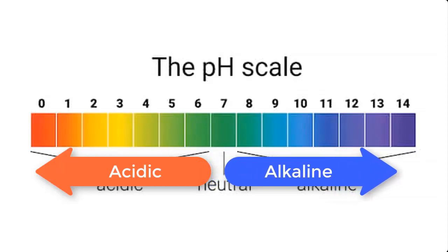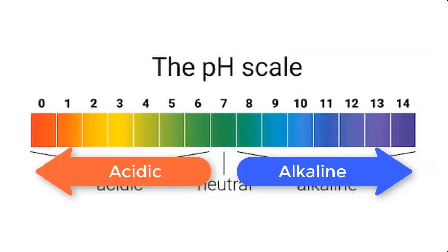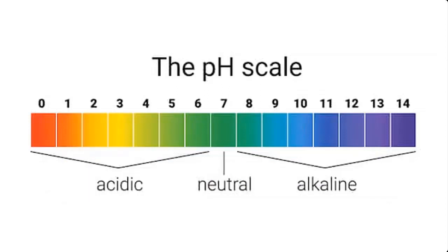In summary, 8 is least alkaline while 14 is most alkaline. Every unit on the scale is represented by a color, so in our test we are going to match the color of our universal pH paper with the pH scale color, and that will determine the pH of our solution.